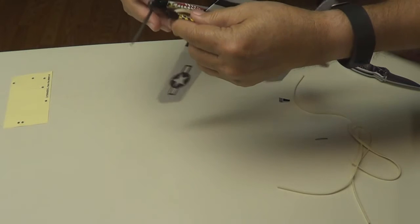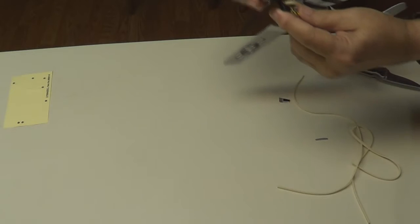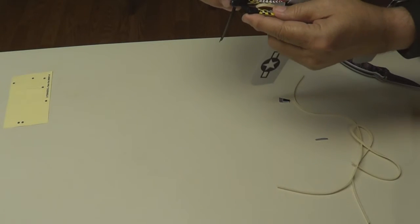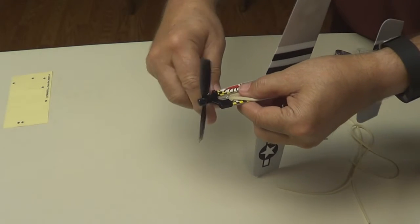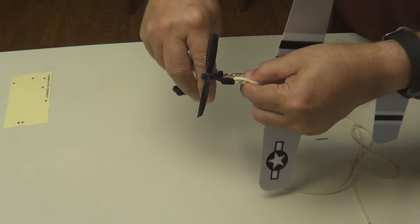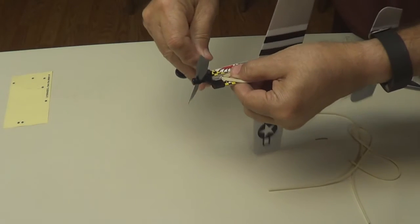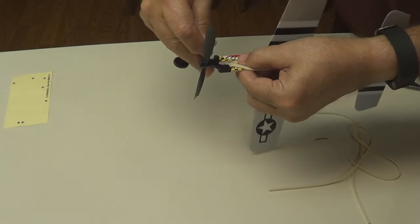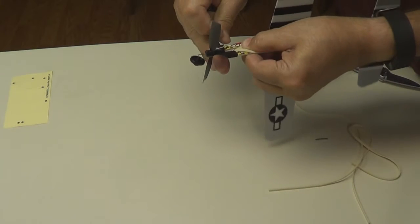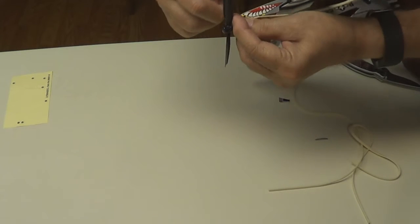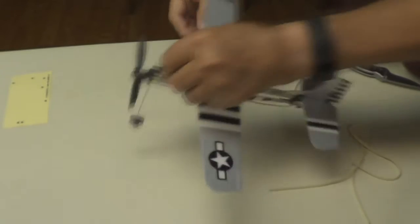Let's put the landing gear on now. It snaps in right below the nose on the fuselage. Right there. Not real easy to get it in there. I think we got it. There it is.